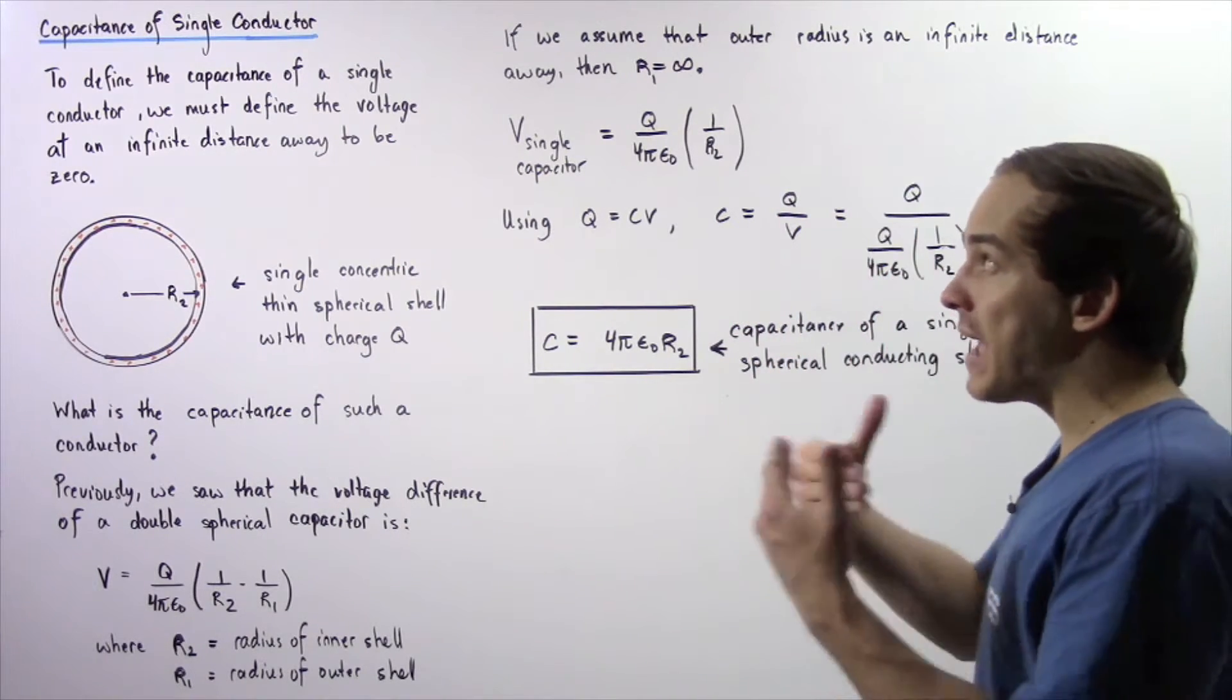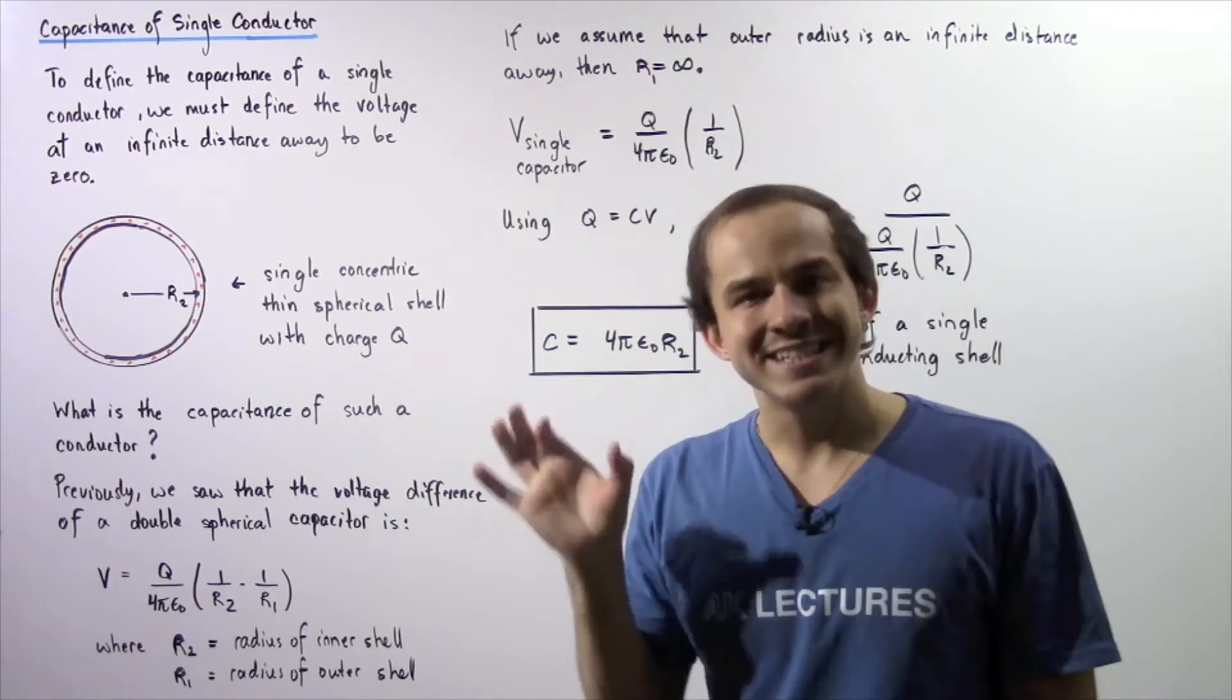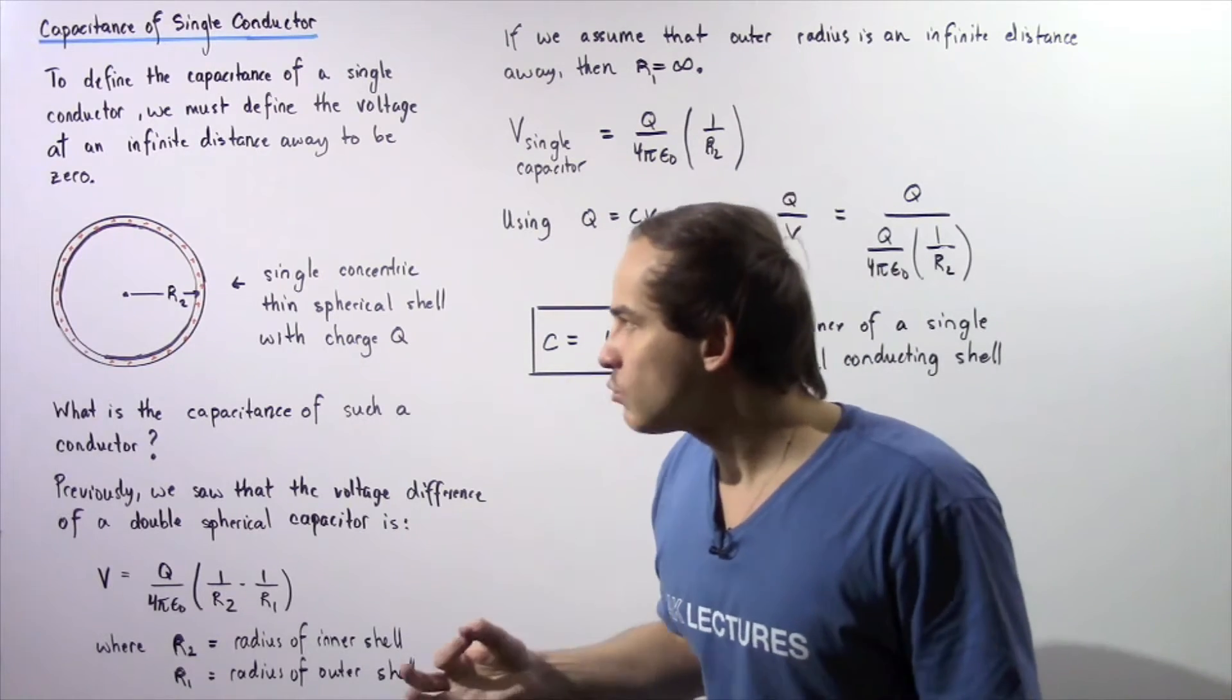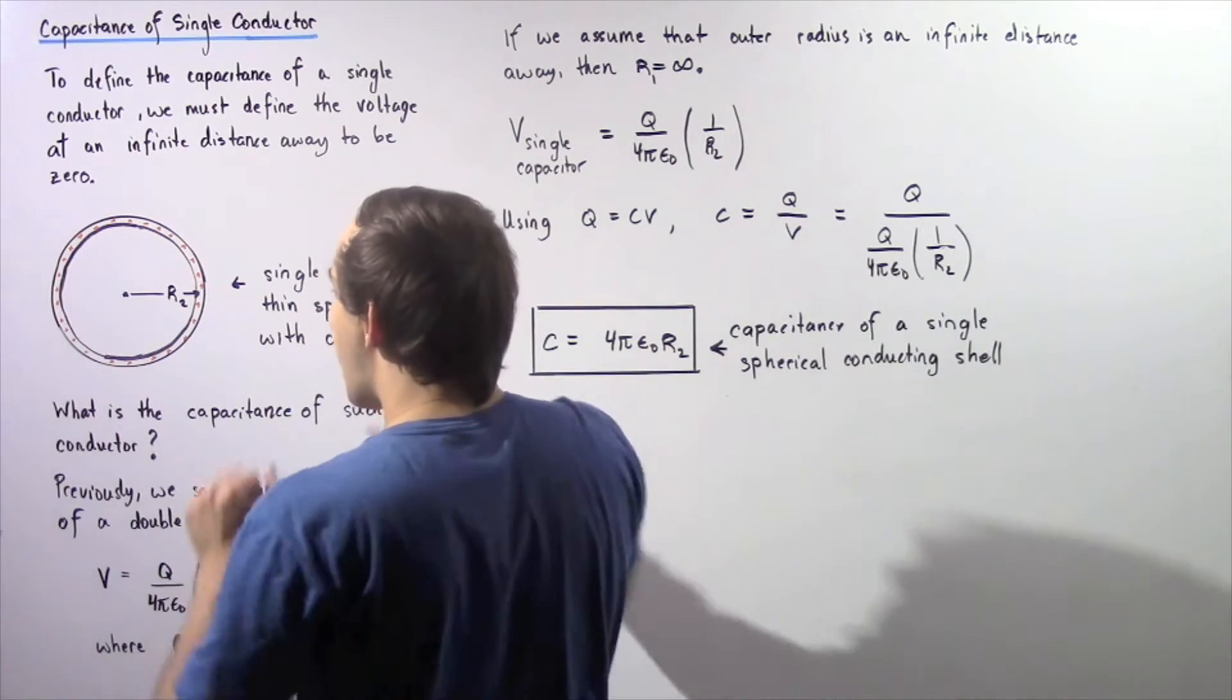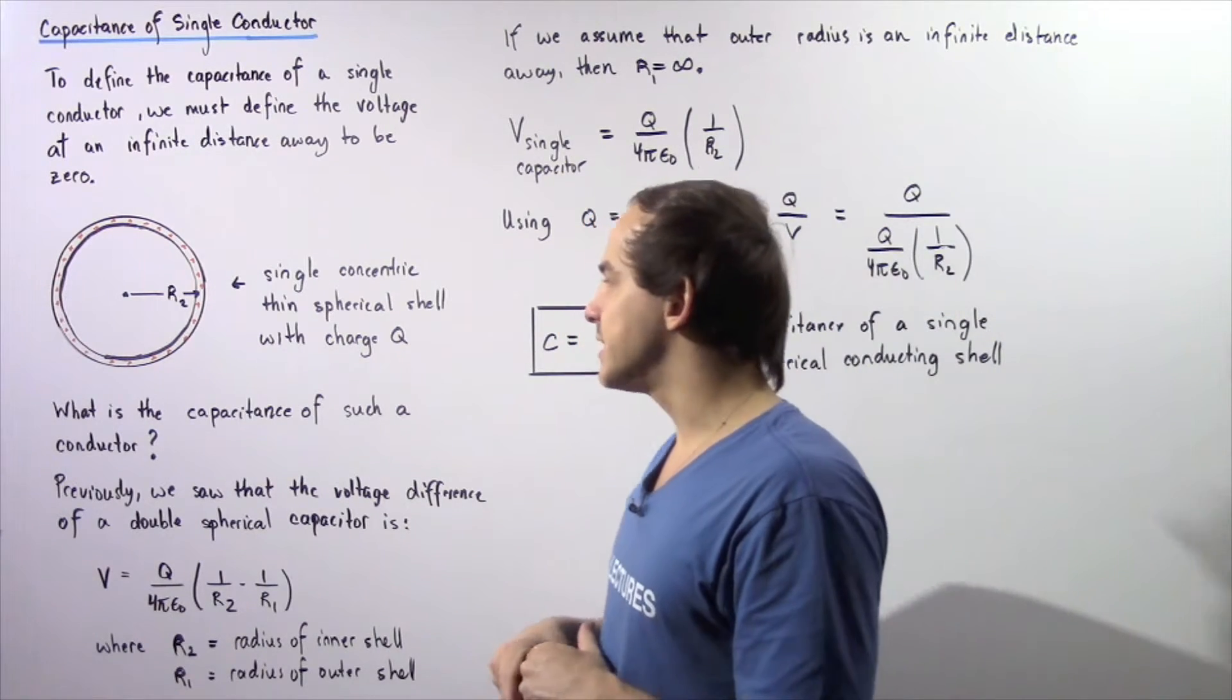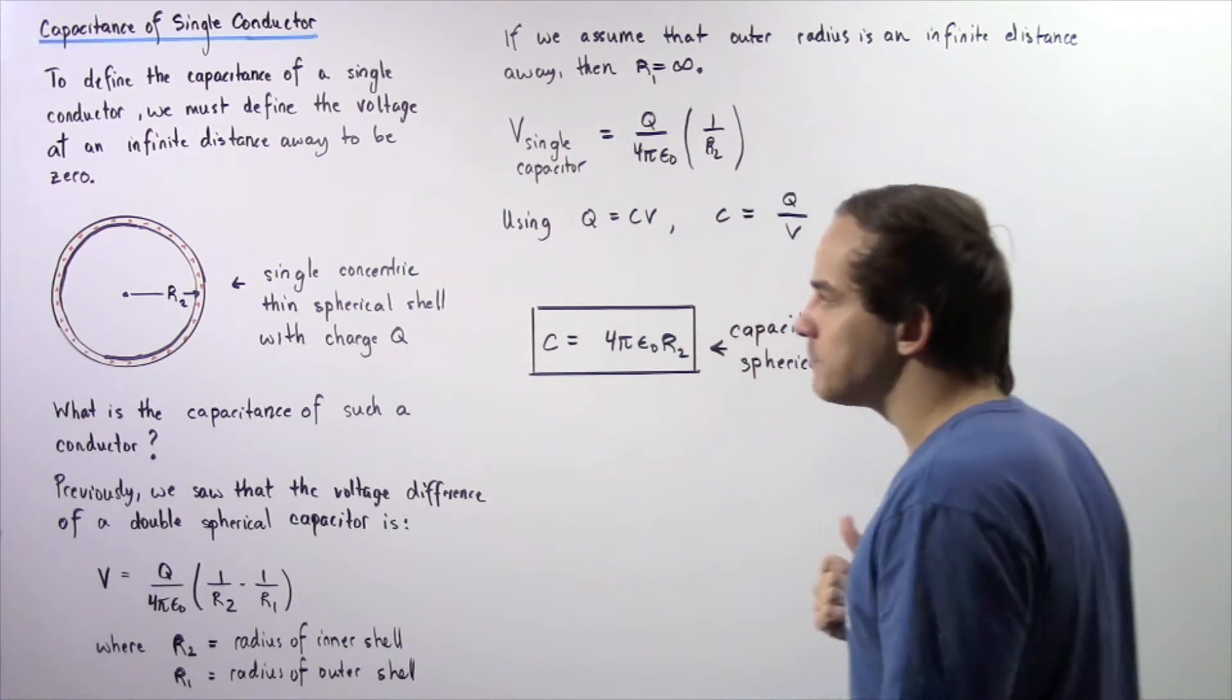Now we're going to examine capacitance in terms of a single conductor. To define the capacitance in terms of a single conductor, we must define the voltage at an infinite distance away to be zero. For example, if we have a conducting object, at a distance infinitely far away, the voltage is assumed to be zero at that particular point. So in such a case, we can define what the capacitance is of such an object.